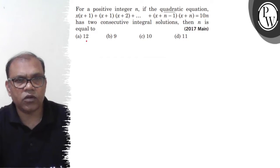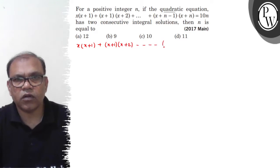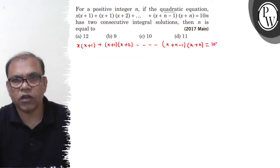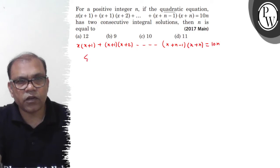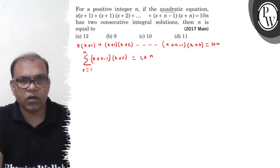So, the equation is x(x+1) + (x+1)(x+2) + ... + (x+n-1)(x+n) = 10n. We write this as summation of (x+r-1)(x+r), where r goes from 1 to n, equals 10n.